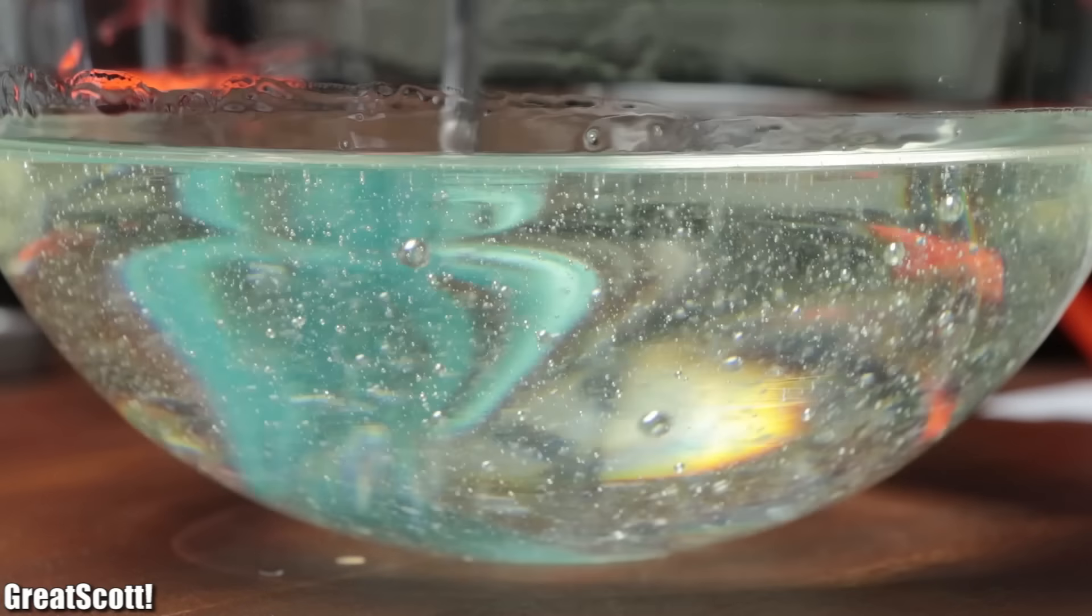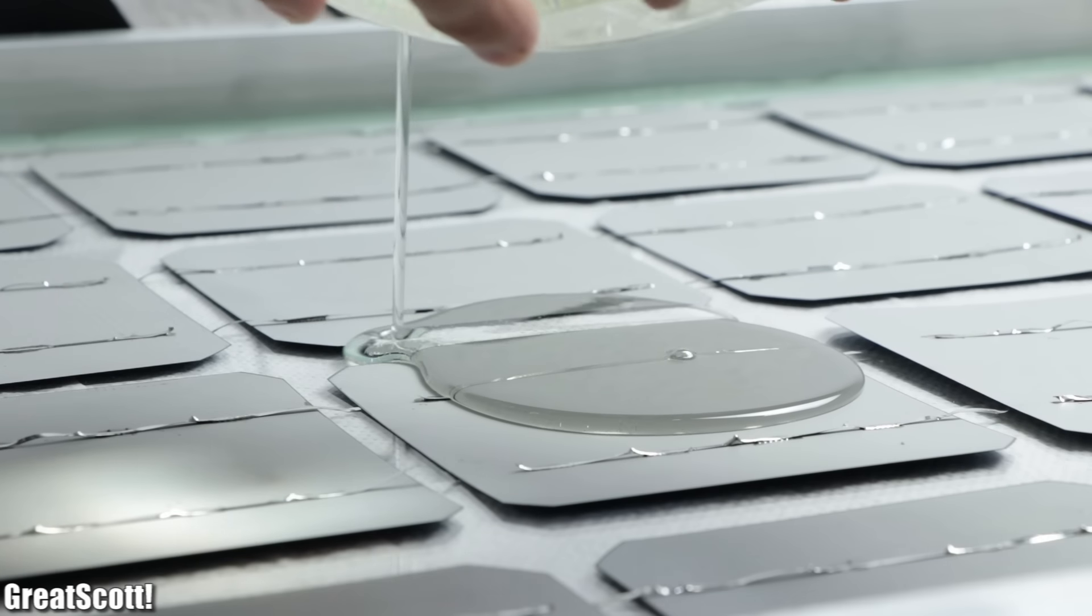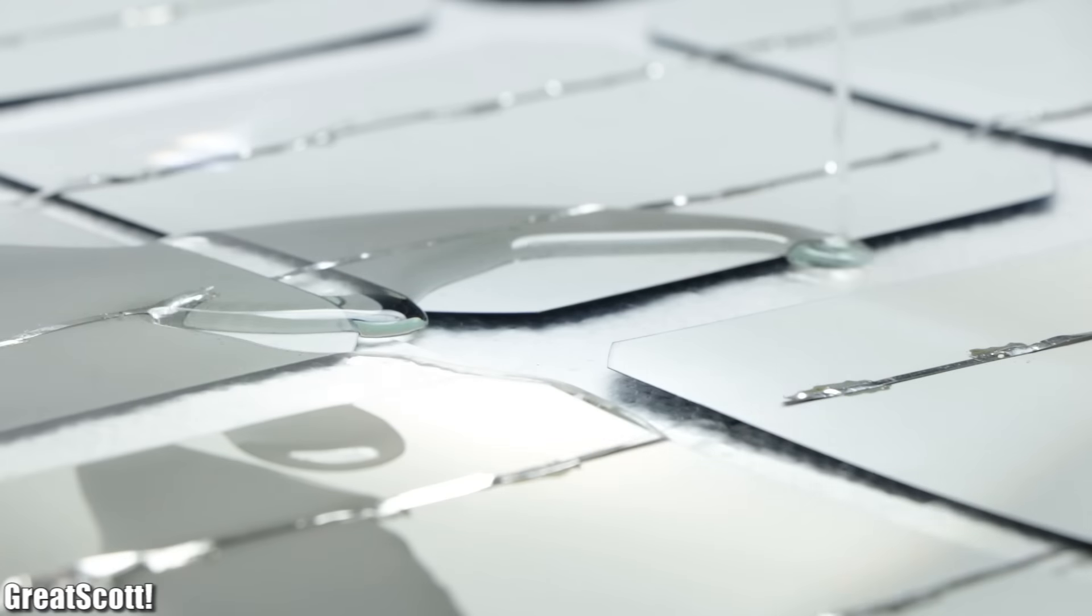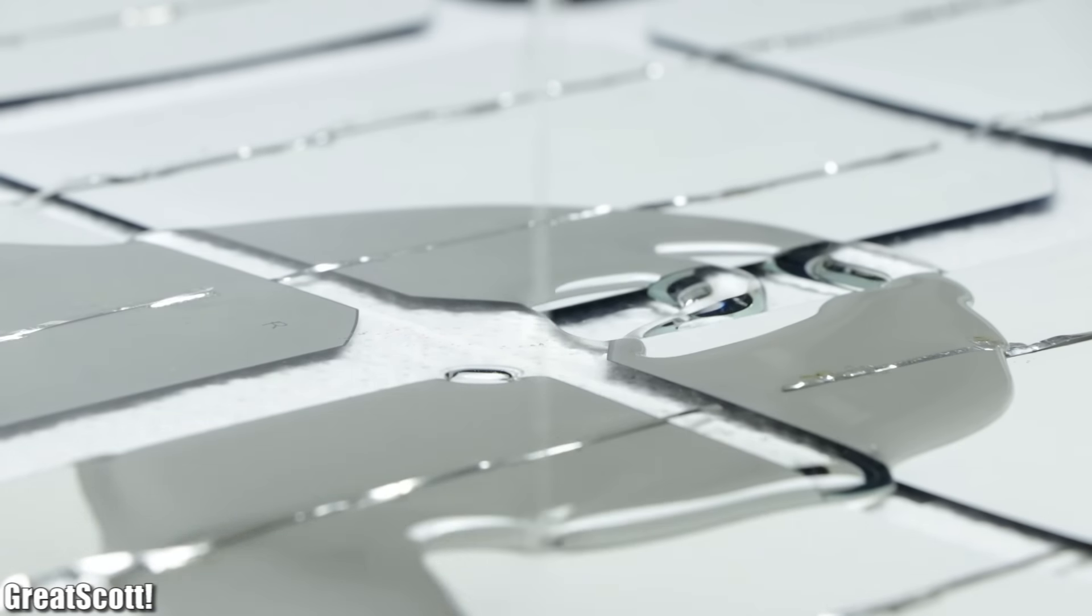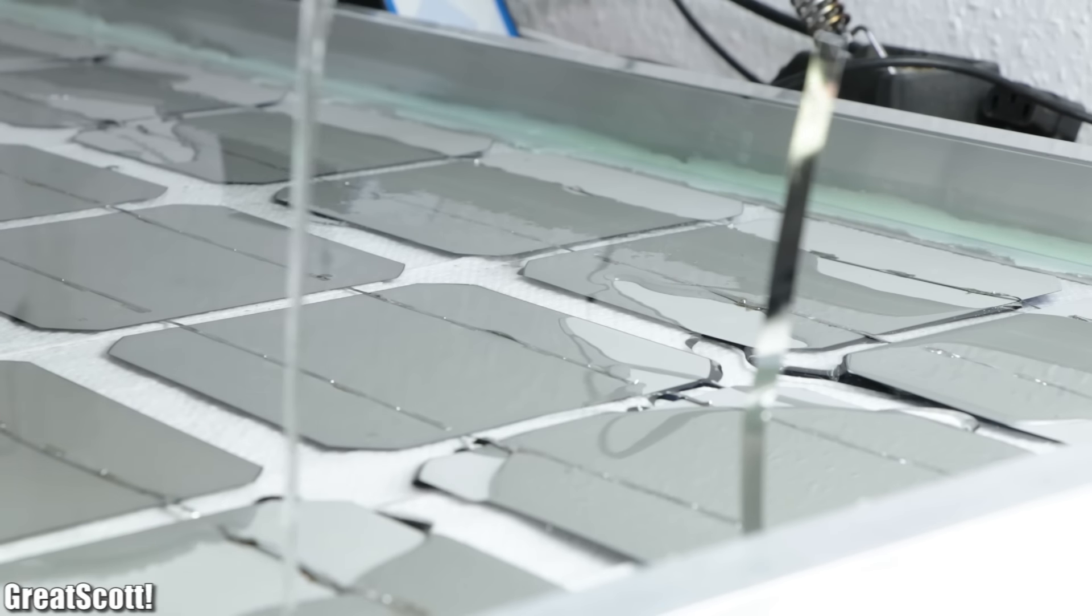That means it was time for me to mix up a bigger batch of the resin and slowly cover all the 36 solar cells with it. It took me a total of around three kilograms of the resin, but in the end all solar cells were completely covered in it.